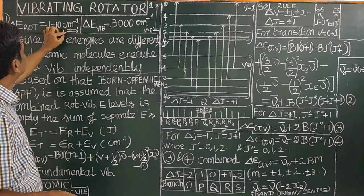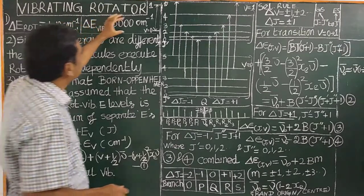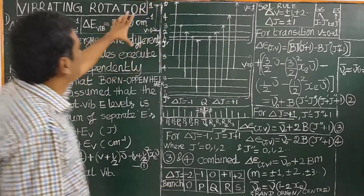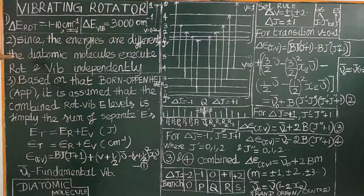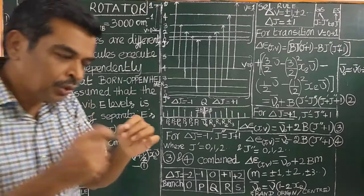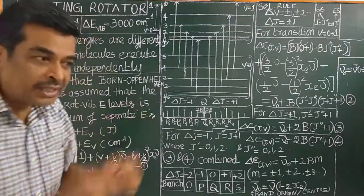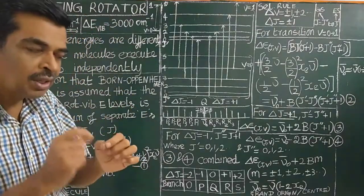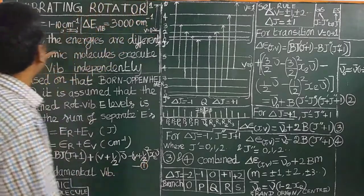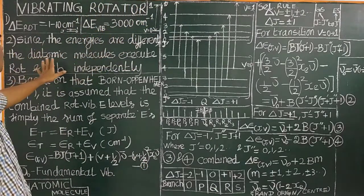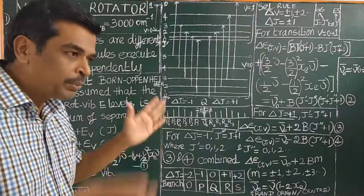The separation of rotational energy levels, J equal to 0, is now 1 to 10 cm inverse. The separation of vibrational energy levels is very, very large — 3000 cm inverse. Since the energy required to cause vibration is very much greater than the energy required to induce rotation, the energies are so different. Diatomic molecules execute both rotational and vibrational motion independently.